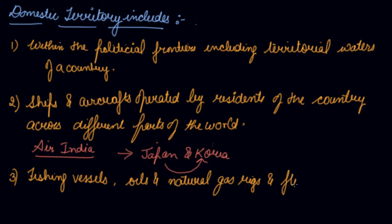The third component includes fishing vessels, oil and natural gas rigs, and floating platforms operated by residents of the country in international waters, engaged in extraction in areas where the country has the exclusive right of exploitation. For example, if fishing boats operated by Indian fishermen go into international waters and bring back fish to sell in the country, the income generated will be domestic income.